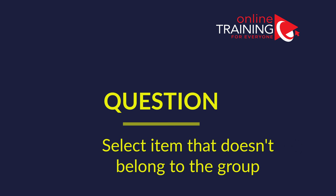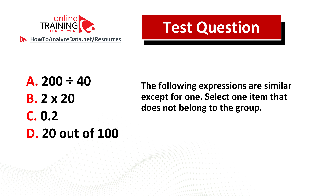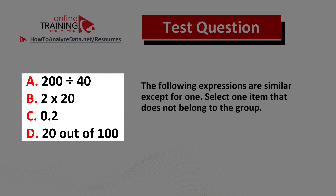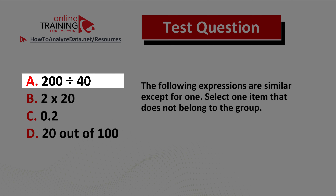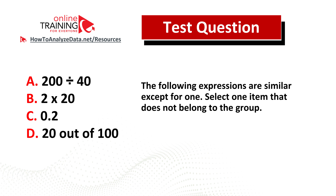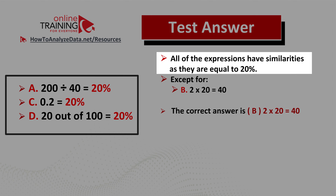Here's an interesting question from the real test. The following expressions are similar except for one — select the item that does not belong to the group. You have four items: 200 divided by 40, 2 multiplied by 20, 0.2, and 20 out of 100. Select the one that does not belong. Now might be a good time to pause and see if you can come up with the solution on your own.